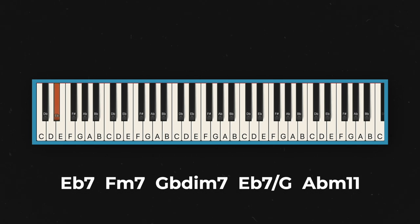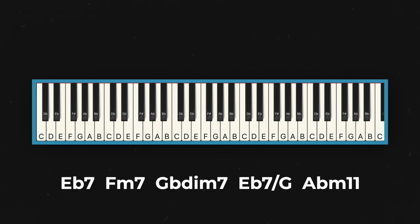Now we'll put that whole walk-up together — first, just the bass line. You can hear and see how it's just walking up. Let's add the chords: that's Eb7, F minor 7, Gb diminished 7, Eb7 over G, resolving to Ab minor 11.